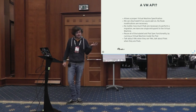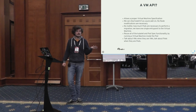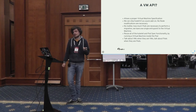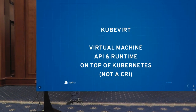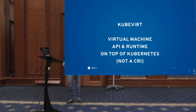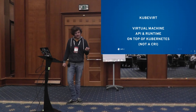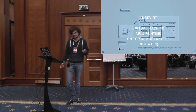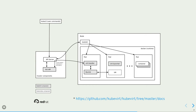Running the virtual machine inside a pod lets us leverage all the pod functionality Kubernetes provides, instead of having to replicate it. The user can talk about VMs when talking about VMs on Kubernetes, and about pods when talking about pods. So KubeVirt is a virtual machine API in Kubernetes, with a runtime for virtual machines on top of Kubernetes — rather than a container runtime implementation.